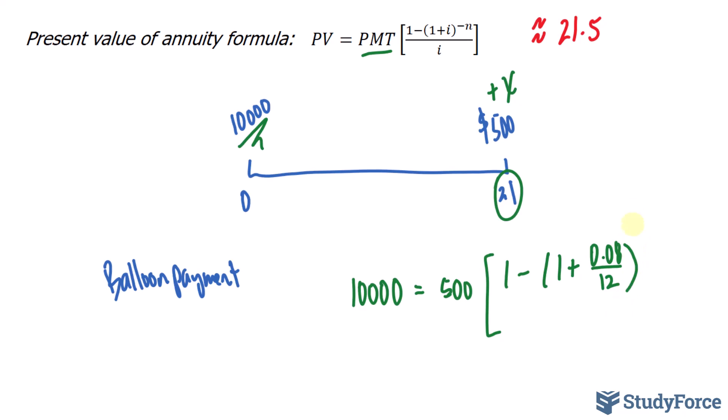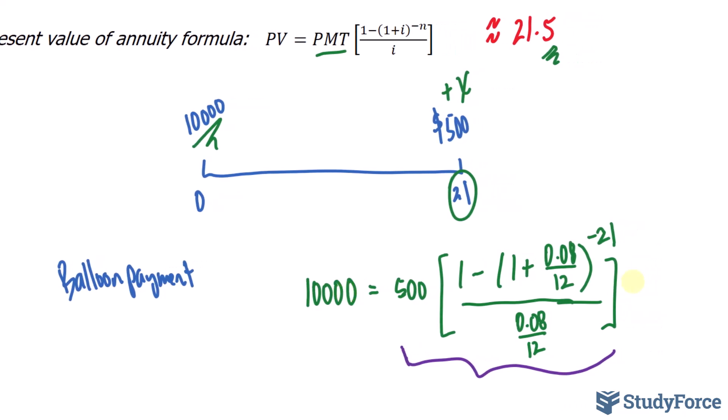That represents our i value, and that's being raised to the power of negative 21. Remember, we're not considering this partial payment at the moment; we're just concerned about up to 21 periods. That's being divided by the same interest of 0.08 divided by 12. If you calculate this on its own, it will be a little less than $10,000. You can verify that on your own with a calculation. So we need to add another value X.